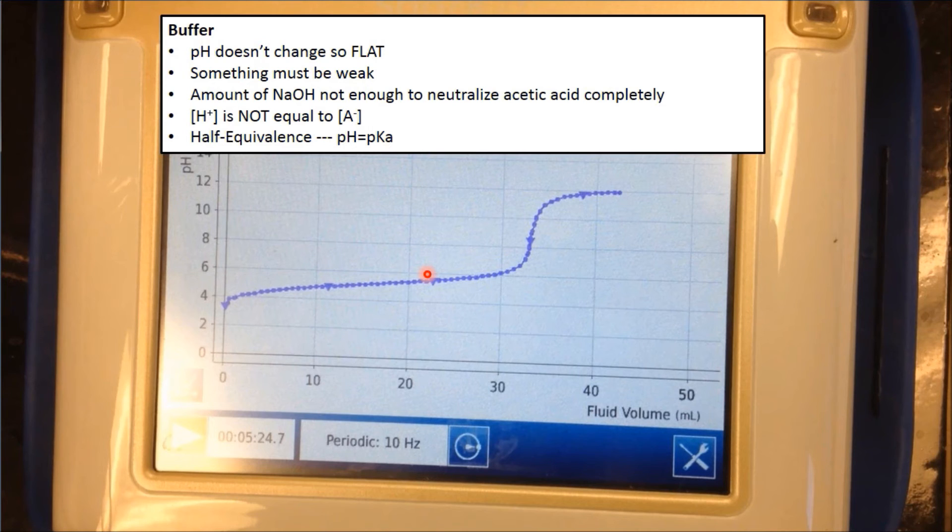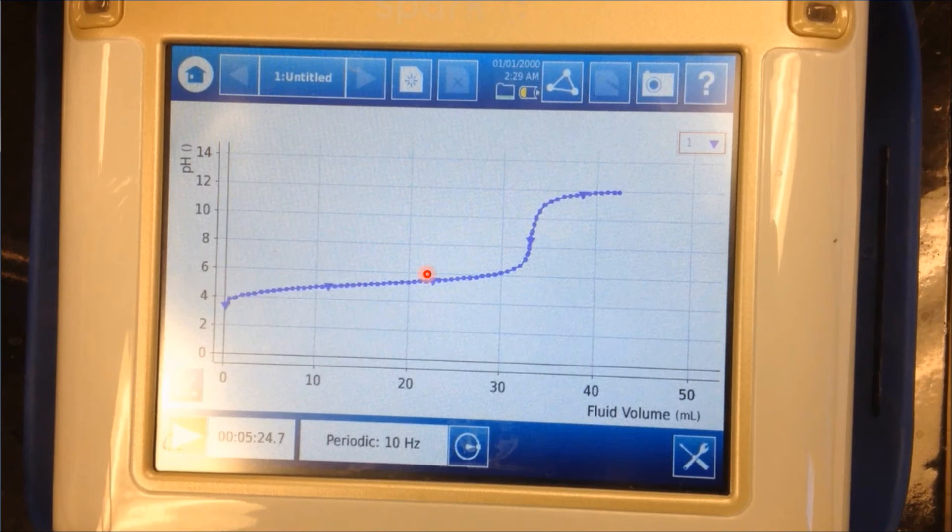On to our next part of the titration curve. We have the equivalence point. This point is right on the steep little hill here, right around here somewhere. The equivalence point is there no matter if it's a strong base and strong acid, or a weak acid and a strong base. This happens when the solution is neutralized. So the acetic acid is now neutralized. Many people would say that it's neutralized, right? So the equivalence point would be at around 7. Seven is where the pH, where the solution is neutral.